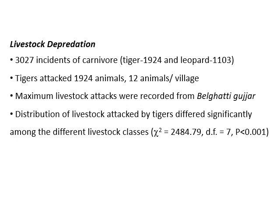In terms of livestock depredation, 3,027 incidents of carnivore attack on livestock were recorded during the study period. Of these, tigers attacked 1,924 livestock while leopards attacked 1,103 livestock. On average, 12 animals per village were attacked by tigers during the study period. The maximum livestock attacks were recorded from Belgatti Gujar Khatta, located in the southern portion of Corbett Tiger Reserve.